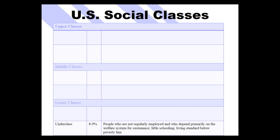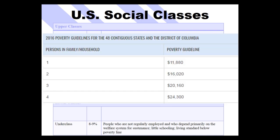What is the poverty line? According to the U.S. government's 2016 poverty guidelines, for just one person it's about $11,900. If you make less than that, you're below the poverty line. For two people it's $16,000, and for a family of four, $24,000 is about the poverty line.